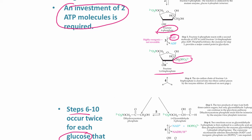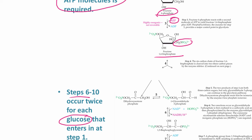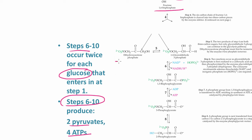Fructose-1,6-bisphosphate has a six-carbon chain that is cleaved in an enzyme-catalyzed reaction into two three-carbon pieces: dihydroxyacetone phosphate and D-glyceraldehyde-3-phosphate. Of these two three-carbon sugars, only D-glyceraldehyde-3-phosphate continues in the glycolysis pathway.